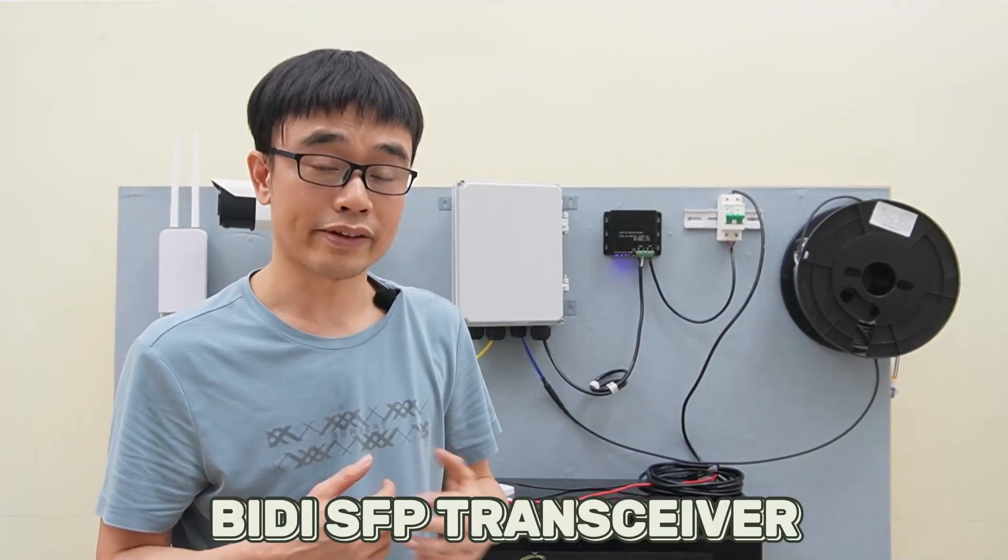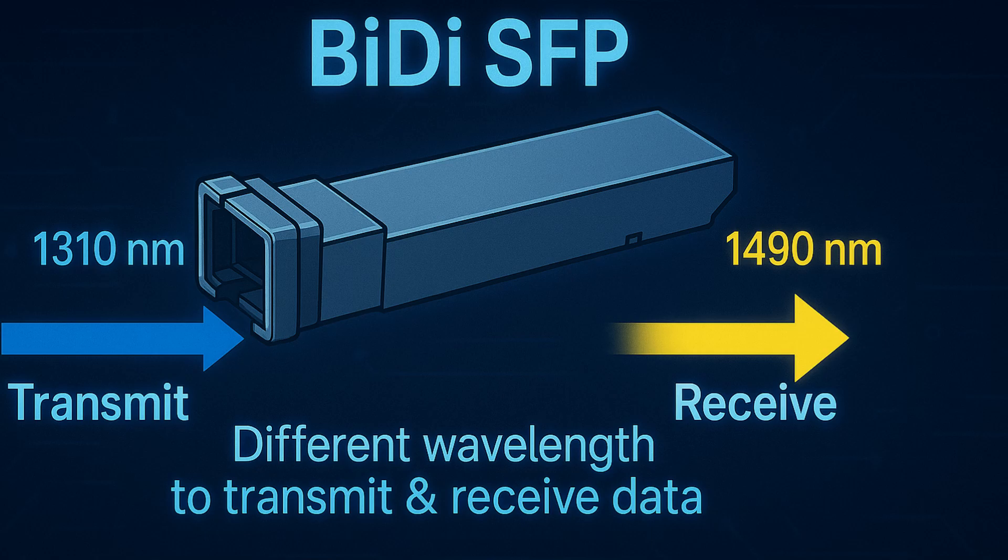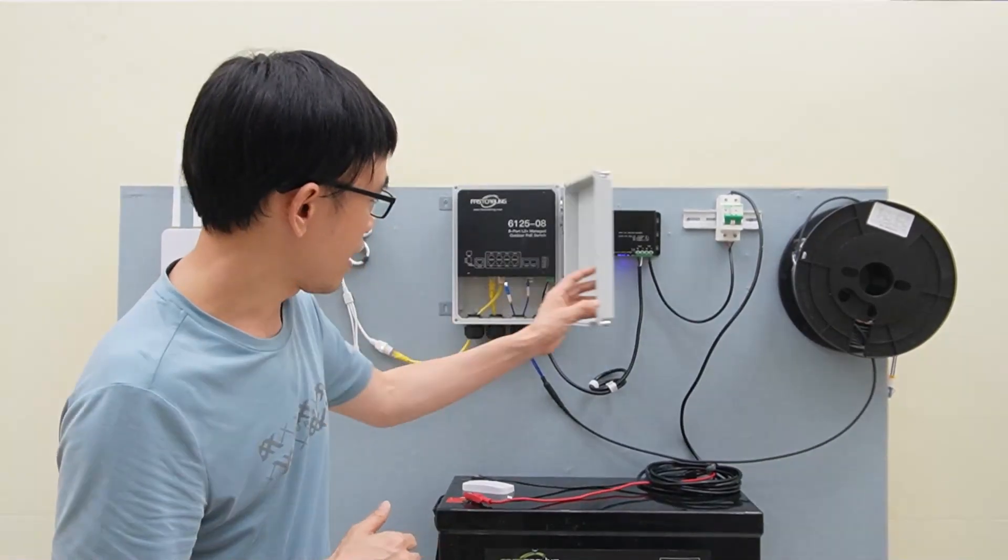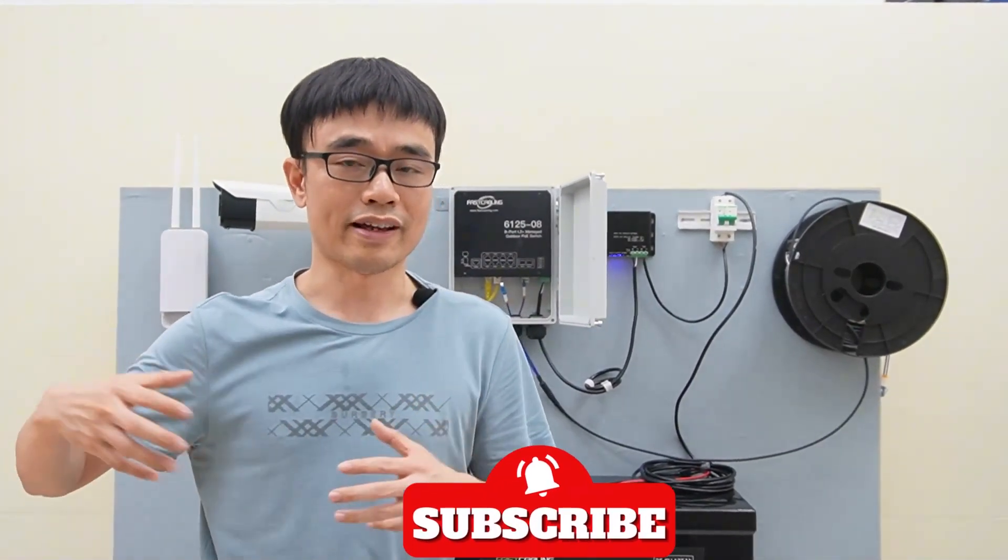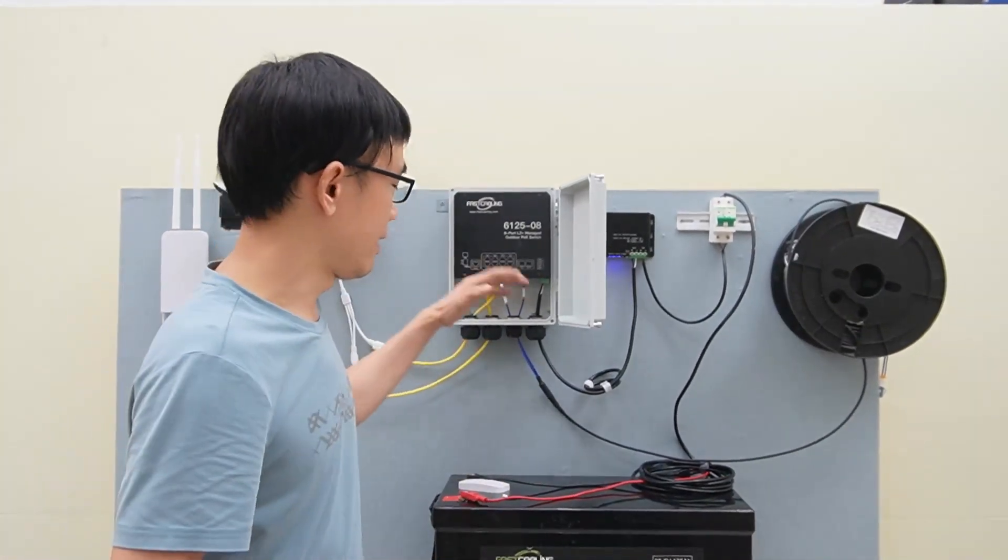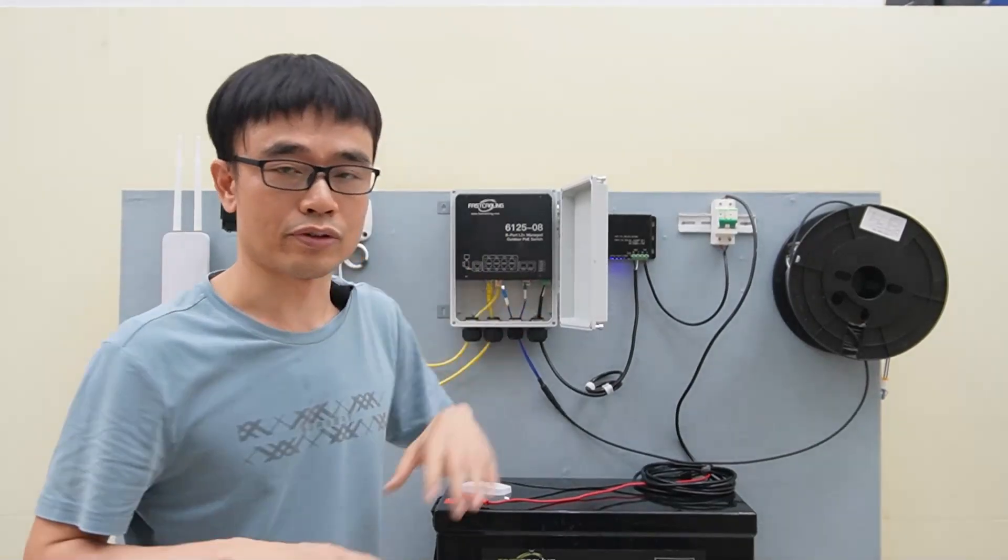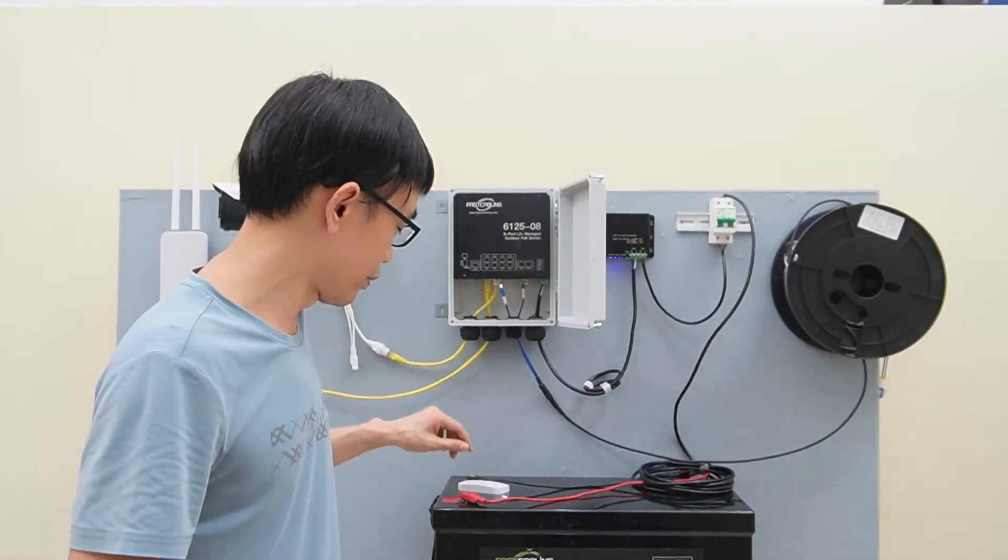You may wonder why we can use just one fiber optic cable to transmit and receive the data. Since we are using the BiDi transceiver, it takes different wavelengths to send and receive the data. We do have another SFP slot, right? If we want to connect another location, we can link this outdoor PoE switch to a second outdoor PoE switch by using the second SFP slot.